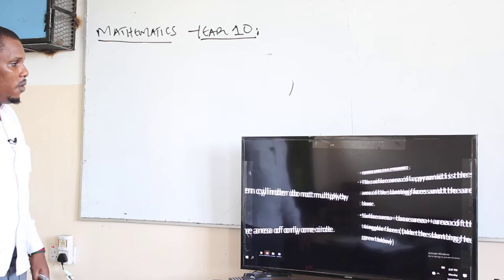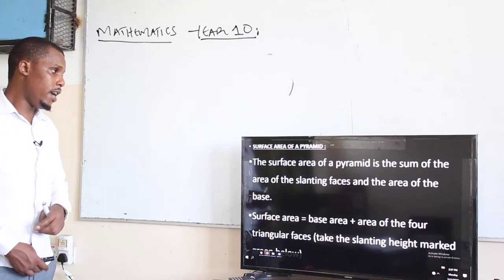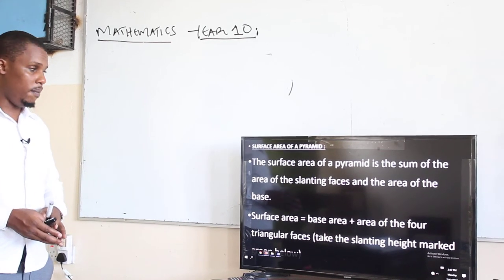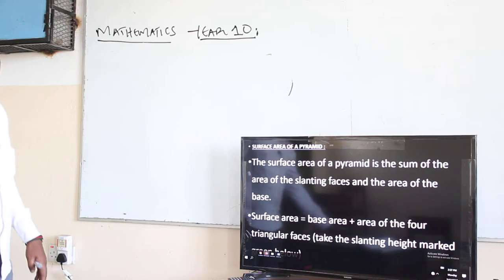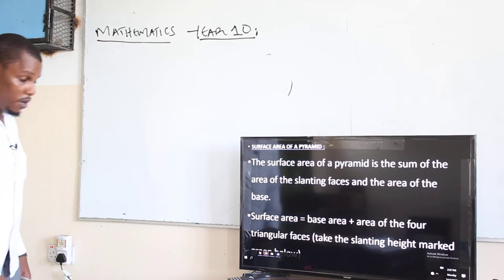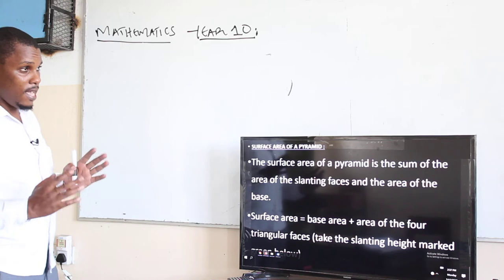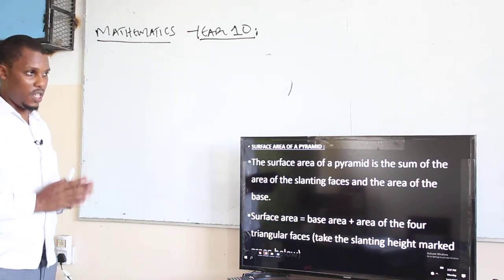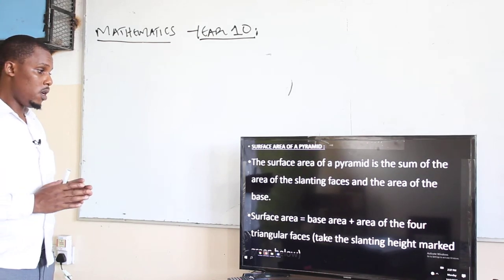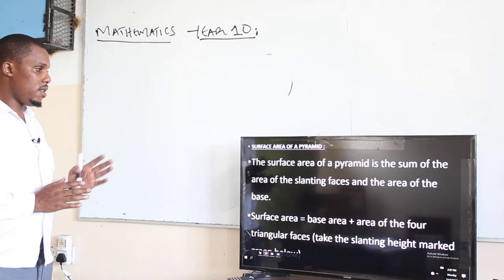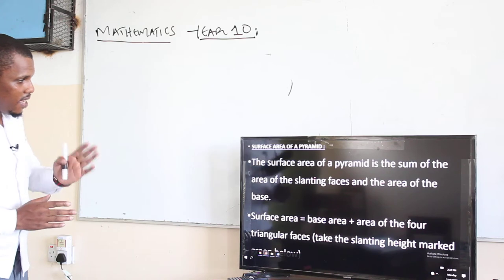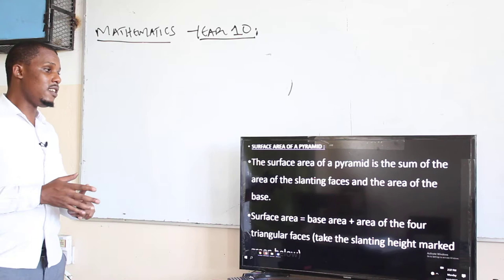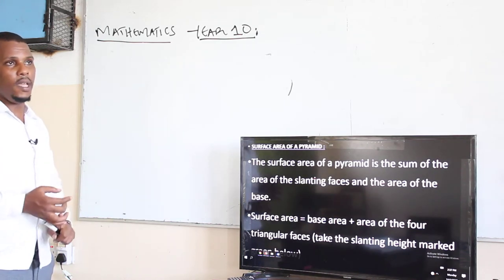So now we move to the second part, and that one is going to be the surface area of the pyramid. Here we are moving now to something which is known as a pyramid. Remember, in a prism we are saying that a figure would have a uniform cross-section. So when we focus now on the case of the pyramid, the surface area of a pyramid is the sum of the area of the slanting faces and the area of the base.